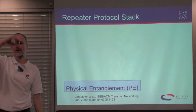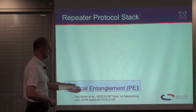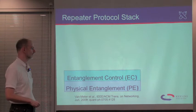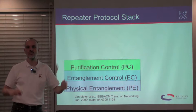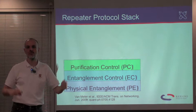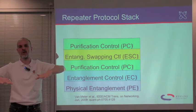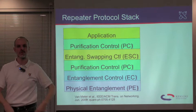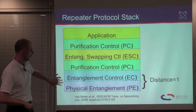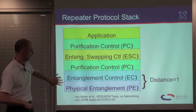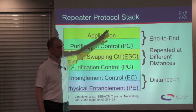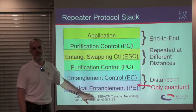We have developed a repeater protocol stack, similar to the layered architectures common in internet stacks or the seven-layer ISO model. At the physical layer, that's where you get your physical entanglement. On top of that, purification allows the two nodes to communicate and decide whether further purification is necessary. Then the entanglement swapping control decides whether it's time to splice together two shorter bell pairs into one longer bell pair. On top of that, because fidelity declines, we're going to have to do purification again. And finally above that, the application — one of the key applications being quantum key distribution. The only actual quantum part of the problem is right here at the physical layer.